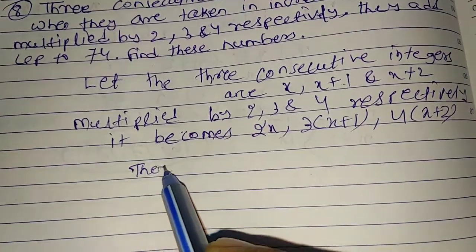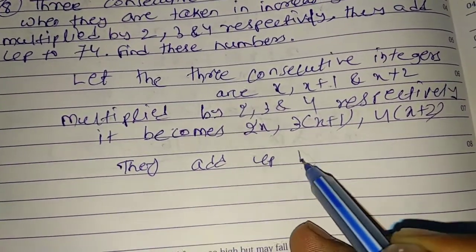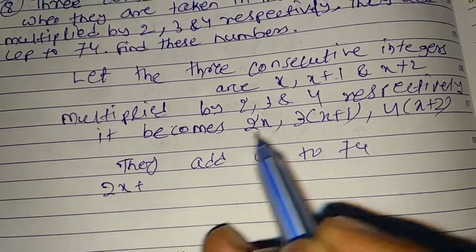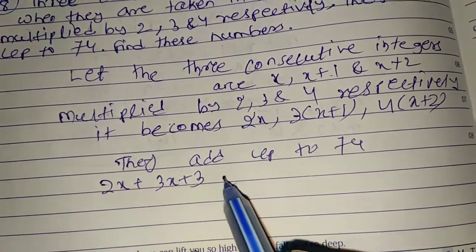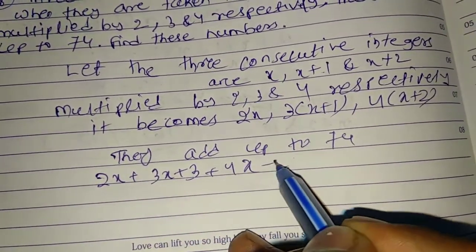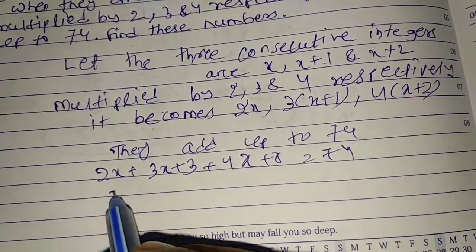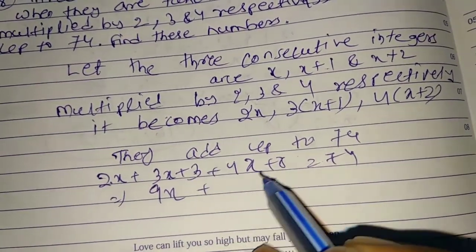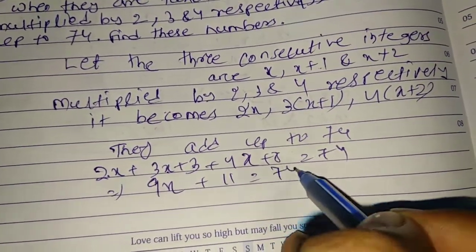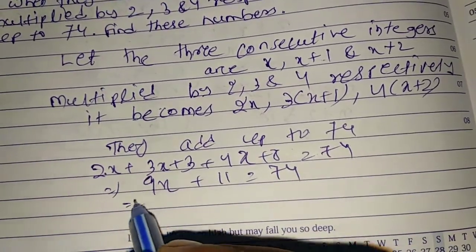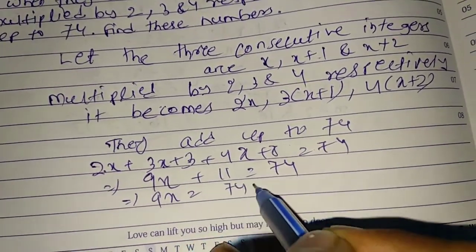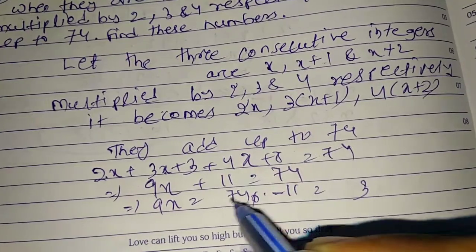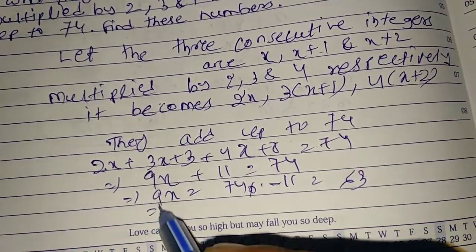2X plus 3X plus 3 plus 4X plus 8 equal to 74. 2X, 3X, 4X is 9X, plus 3 plus 8 is 11, equal to 74. 9X equal to 74 minus 11, that is 63.